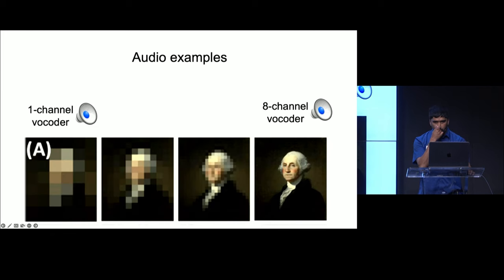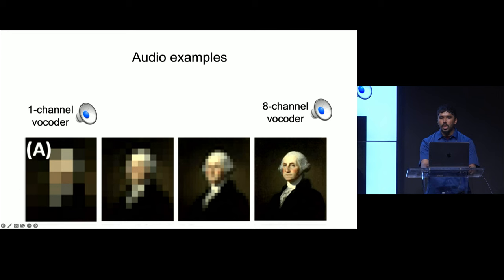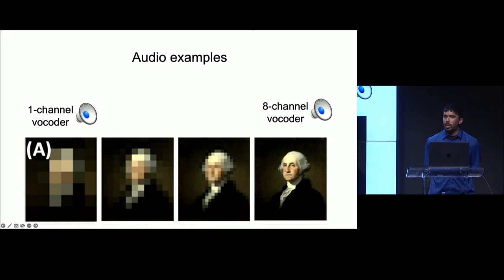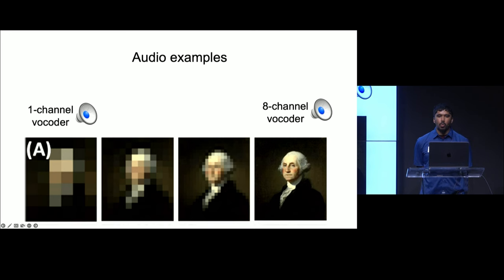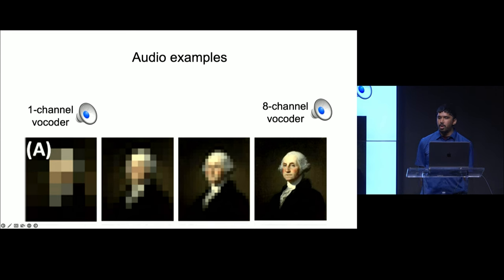To provide a visual example of how vocoders can limit spectral cues, let's look at some picture examples. When the number of pixels is limited to a very low resolution, you can't really tell what you're looking at. But as you increase the resolution by adding more pixels, you can start to see the face emerging from the fuzziness. You'll need about 20 pixels to know who the face belongs to.